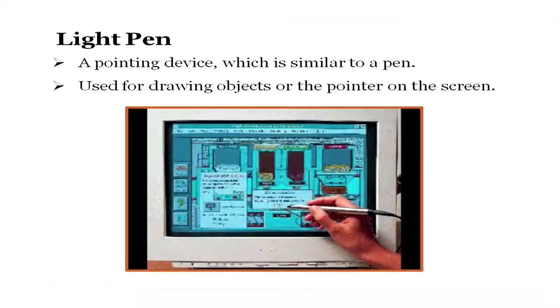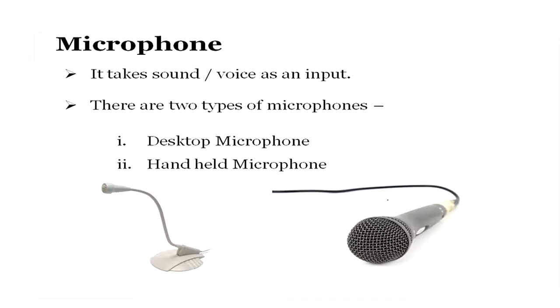The light pen is a pointing device similar to a pen, used for drawing objects or pointing on the screen. It is used by designers to make markings or draw figures directly on the screen. The microphone is another commonly seen input device — it takes sound and voice as input. There are two types shown on screen: a handheld microphone and a desktop microphone. You can record your sound through the microphone and save it as audio files for future use.